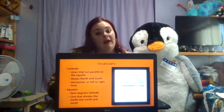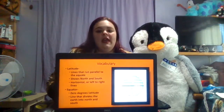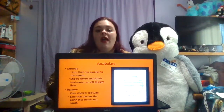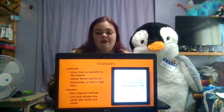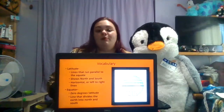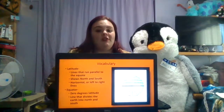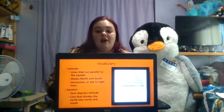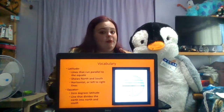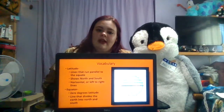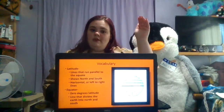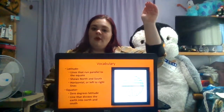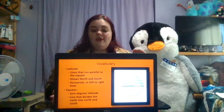Latitude lines run parallel to the equator. They show north and south, and these lines are horizontal, running left to right. The equator represents zero degrees latitude and is the main line that divides the earth into north and south. From the equator, you measure up to the north pole or down to the south pole.